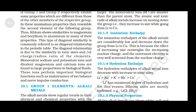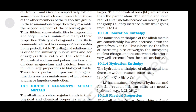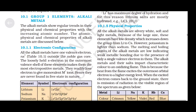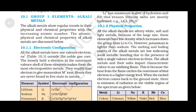Group 1 elements — alkali metals. The alkali metals show regular trends in their physical and chemical properties with increasing atomic number. Electronic configuration: all the alkali metals have one valence electron, ns¹, outside the noble gas core. The loosely held S-electron in the outermost valence shell makes them the most electropositive metals. They readily lose an electron to give monovalent M⁺ ions. Hence, they are never found in free state in nature.